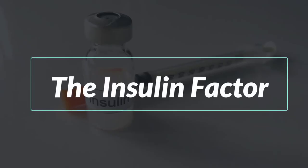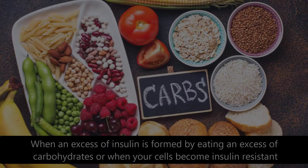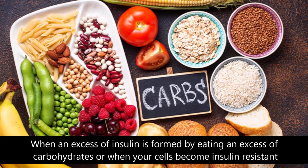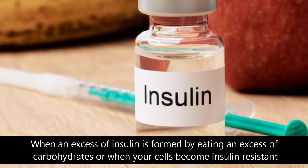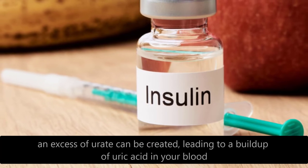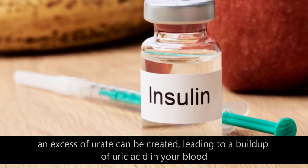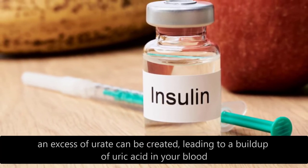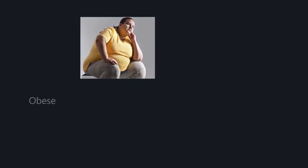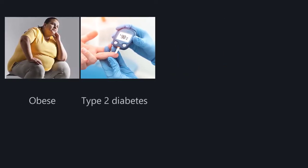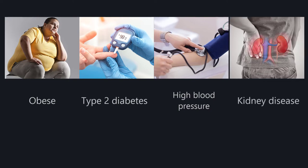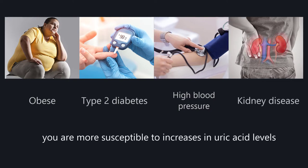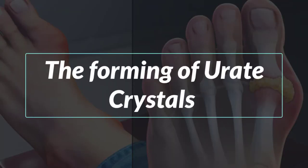When an excess of insulin is formed by eating too many carbohydrates, or when your cells become insulin resistant, excessive urate can be created, leading to a buildup of uric acid in your blood. If you are obese, have type 2 diabetes, high blood pressure, or kidney disease, you are more susceptible to increases in uric acid levels and the forming of urate crystals.